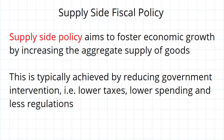Supply-side policy attempts to influence aggregate supply in order to help the economy. More specifically, it generally aims to foster economic growth by increasing aggregate supply, and the way this is typically done is to reduce government intervention in the economy — in other words, lower taxes, lower spending, and fewer regulations. The main philosophy behind supply-side policy is: get government out of the way and let the economy grow.